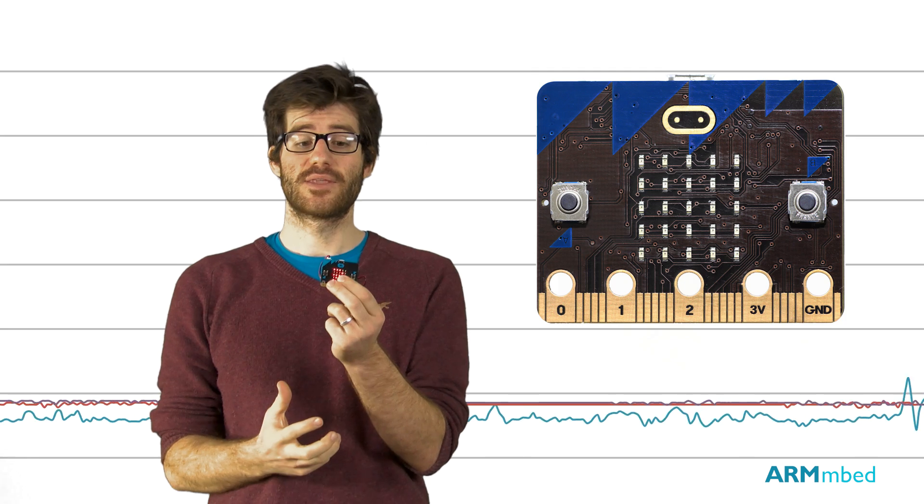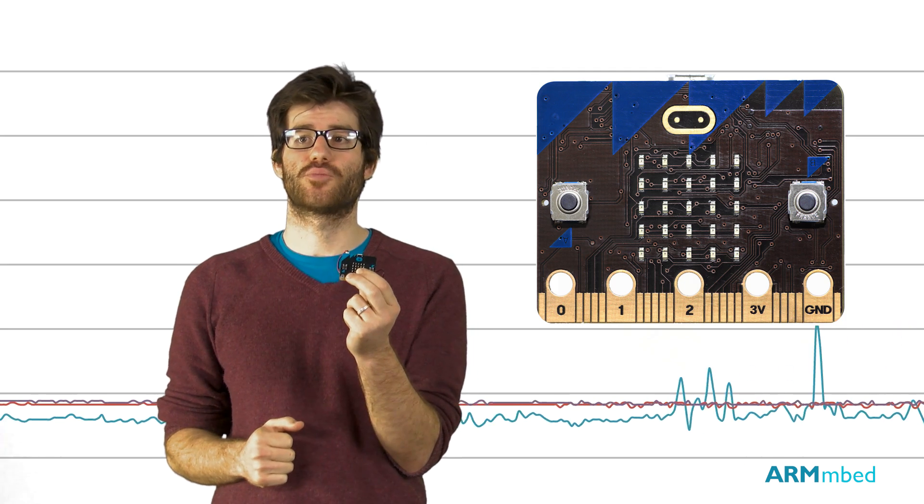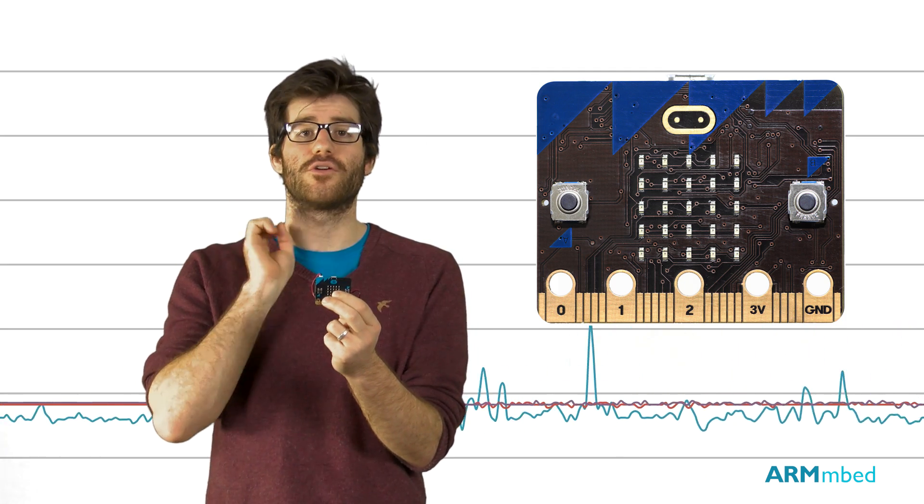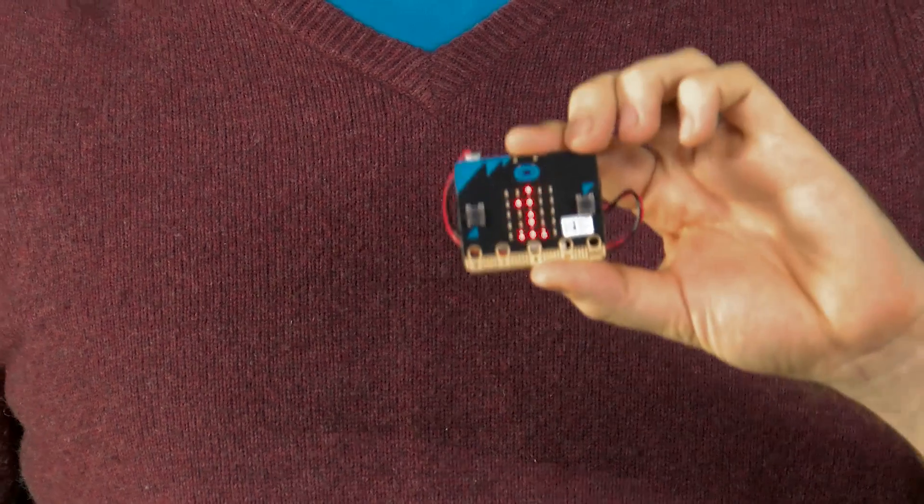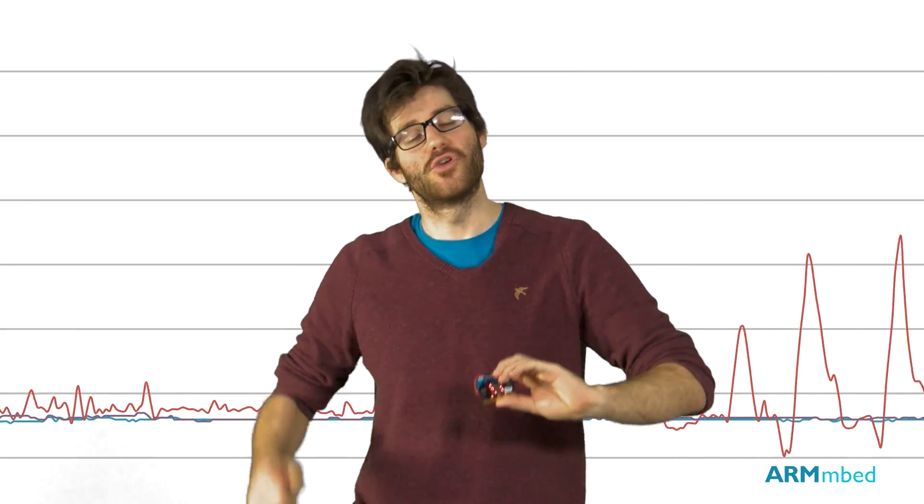We've put these two things together and this microbit is running a special programme that's reading what's on the accelerometer 200 times every second. If I shake this microbit you can see the motion on the graph behind me.